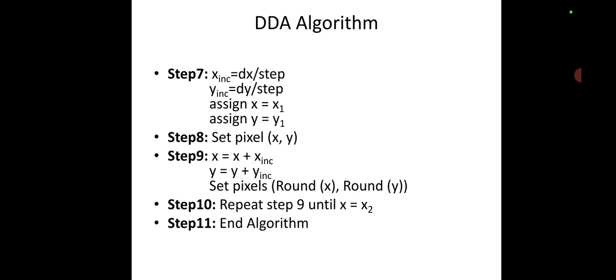Step 9: Now whatever the new pixel we are getting will be as x is equal to x plus x increment, y is equal to y plus y increment. Set pixel as round of x and round of y. Here rounding of x and y value will be needed to plot a particular point. Step 10: Repeat step 9 until x is equal to x₂.